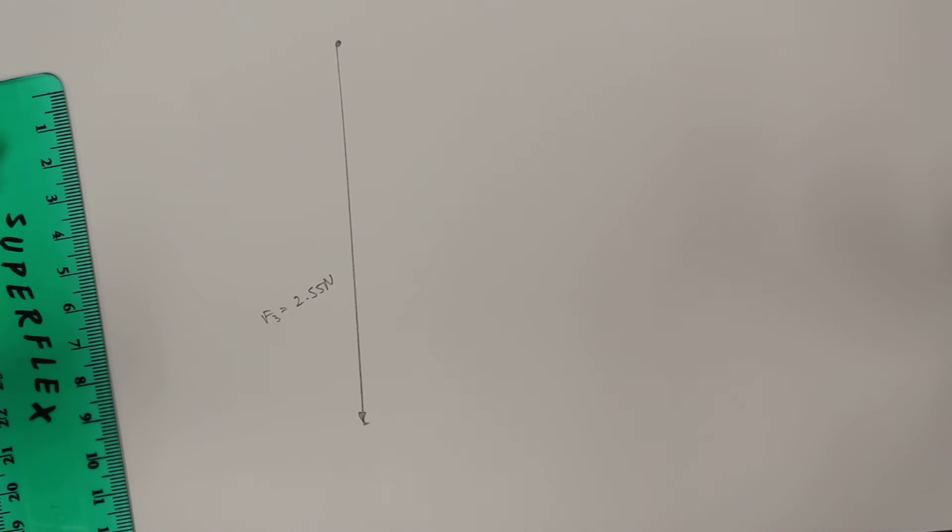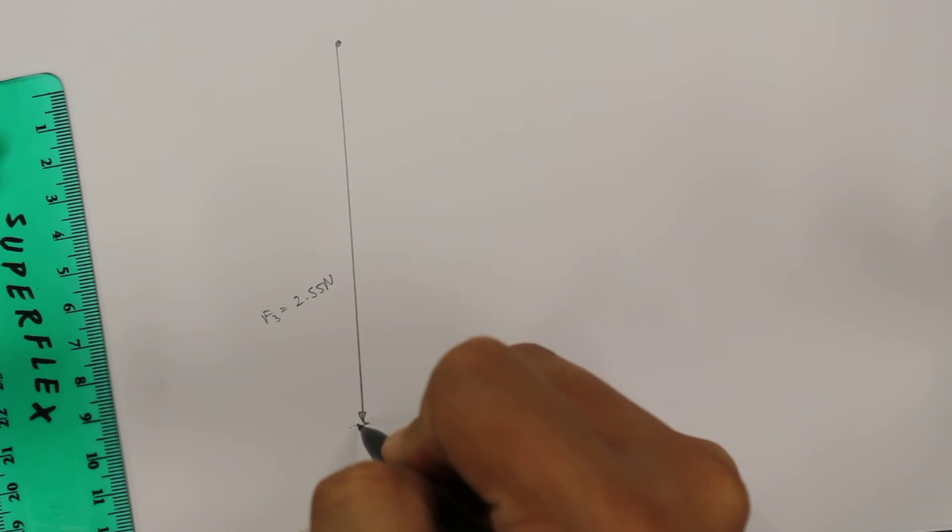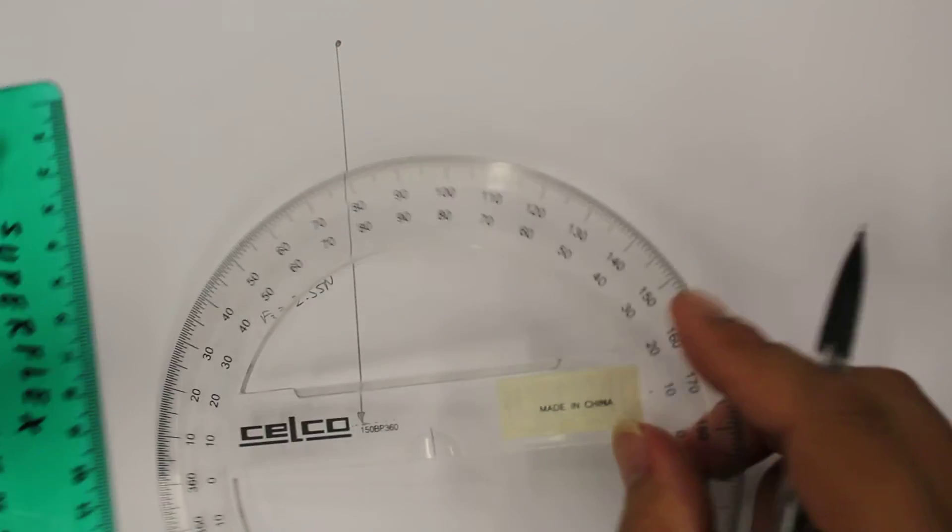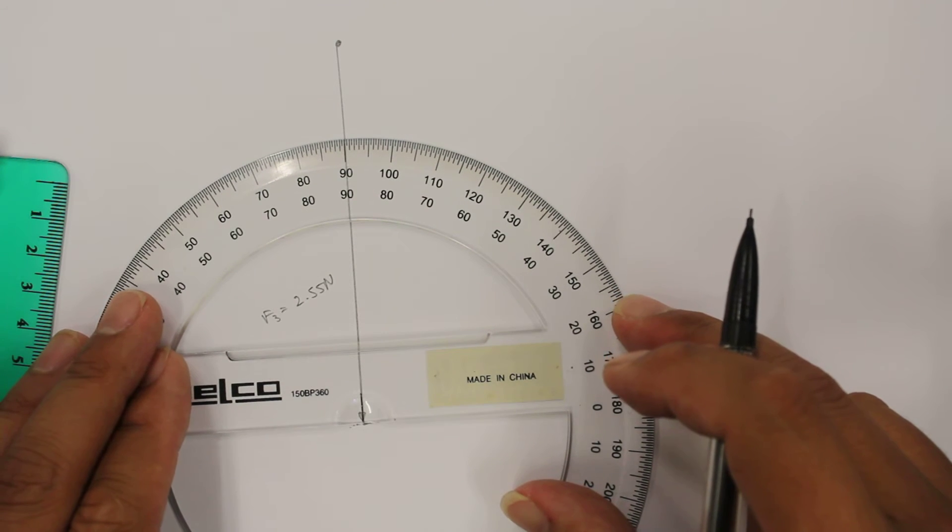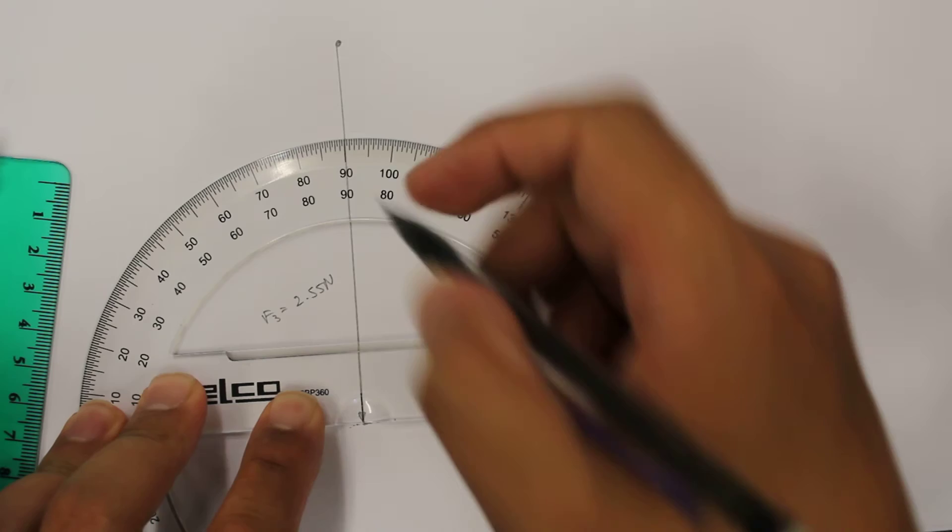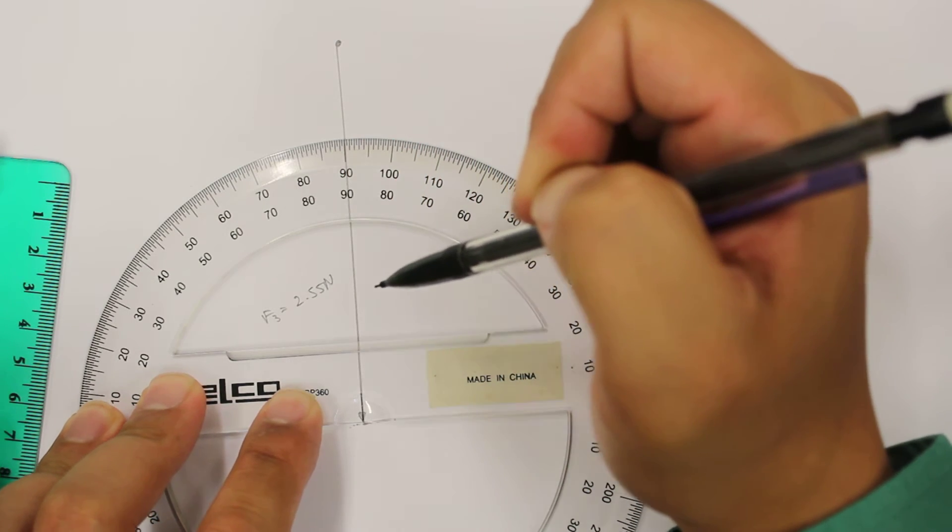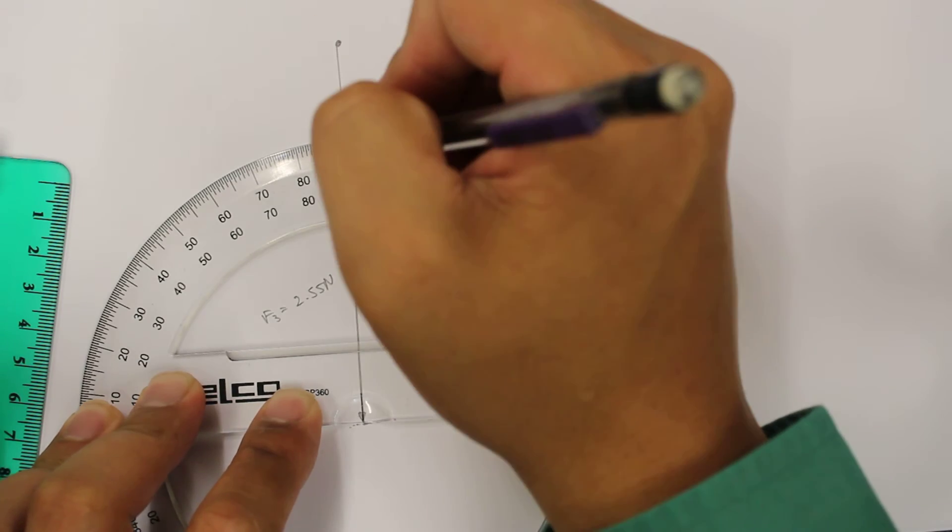Okay, so force number, well this is force 3, let's do force 2. Force 2 had an angle of 143 degrees from this horizontal direction. So if I line this up over here with the 90 degrees, 143.5, so let's go here.